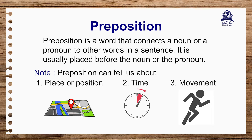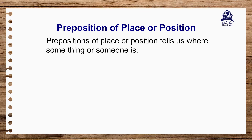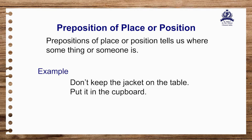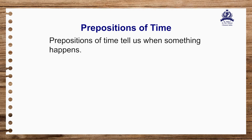Now let's see what is a preposition of place or position. Prepositions of place and position tell us where something or someone is. For example: 'Don't keep the jacket on the table, put it in the cupboard.' So the jacket is on the table, and it should go in the cupboard. The prepositions here are 'on' and 'in'.